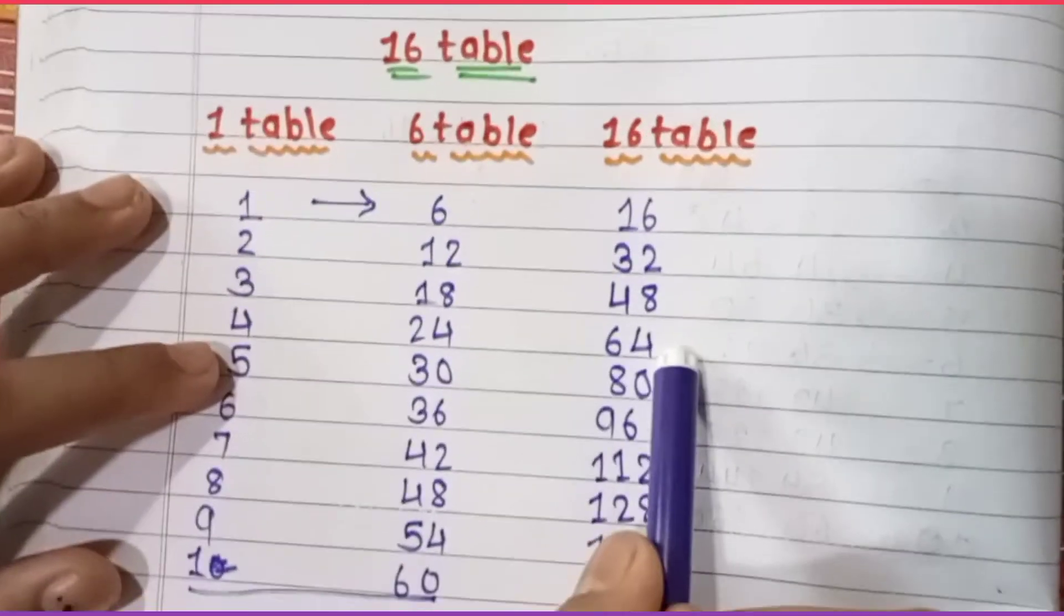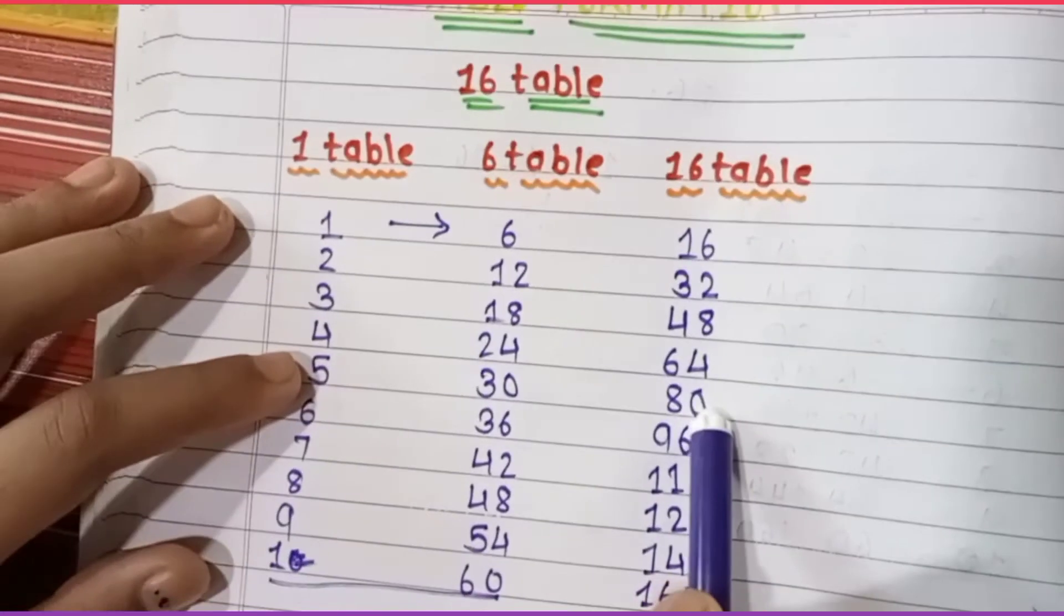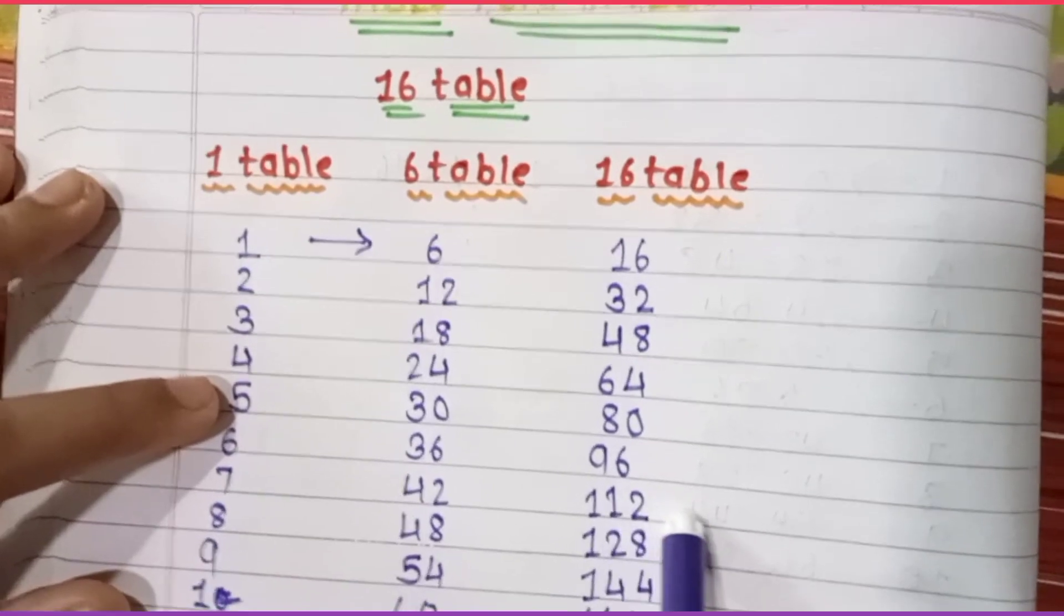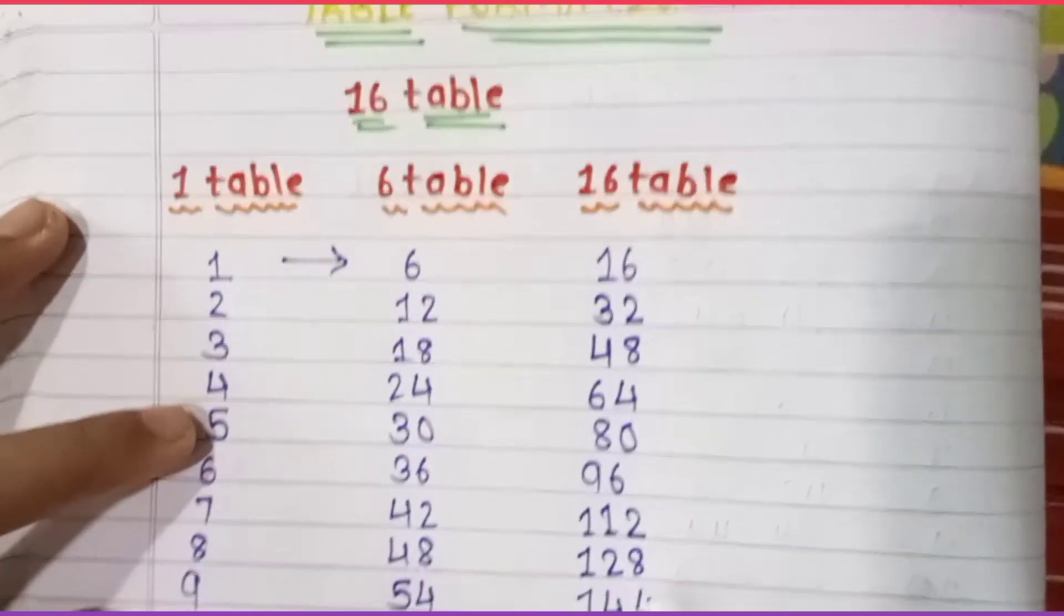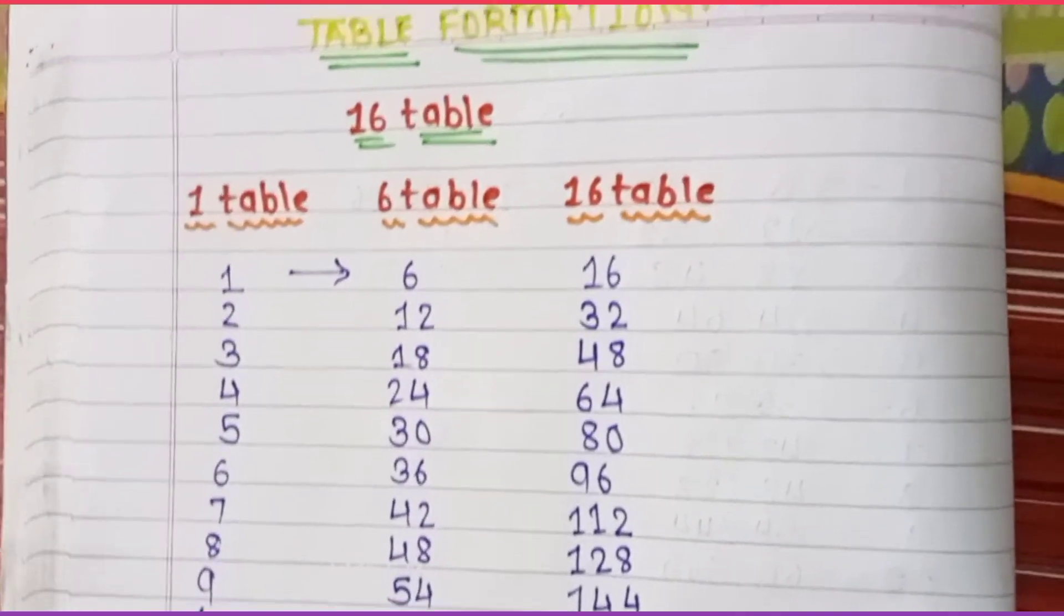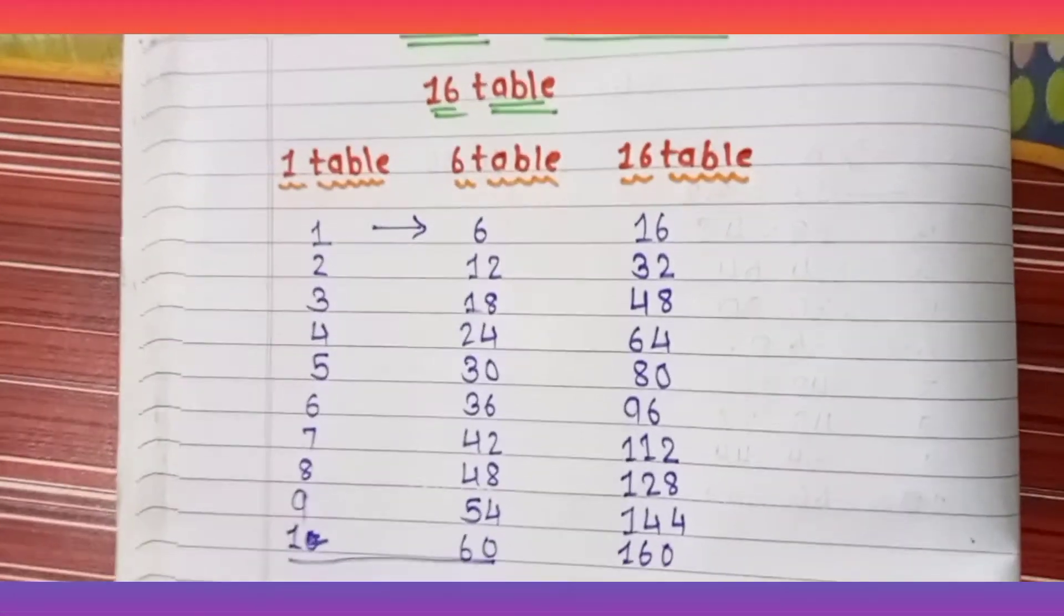We will recall it: 16 ones are 16, 16 twos are 32, 16 threes are 48, 16 fours are 64, 16 fives are 80, 16 sixes are 96, 16 sevens are 112, 16 eights are 128, 16 nines are 144, 16 tens are 160. Yes, we are done with the table.